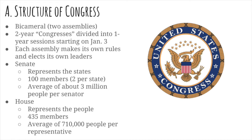The Senate generally represents the states. There are two senators for every state, and about 3 million people on average per senator. In certain states like Wyoming, each senator would represent about 260,000 people, whereas in California each senator represents roughly 20-plus million people. The House represents by population, so there are 435 members in the House, an average of about 710,000 constituents, give or take a few hundred thousand in some places.